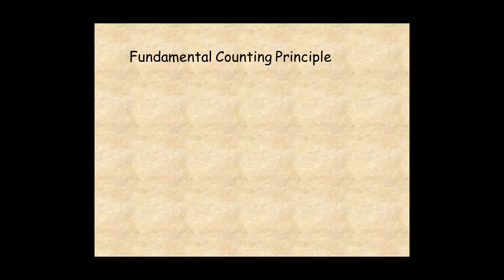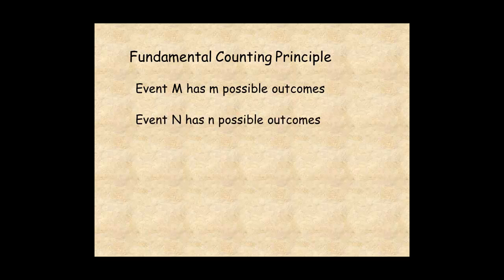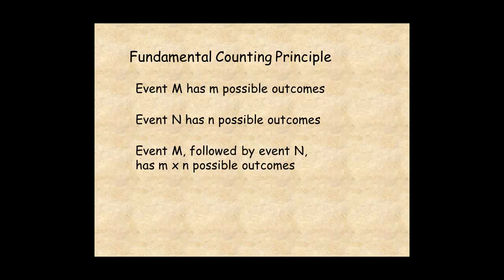which states, if event M has m possible outcomes, and event N has n possible outcomes, then the compound event M followed by N has m times n possible outcomes.